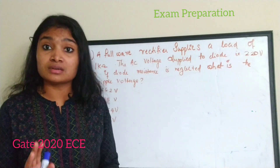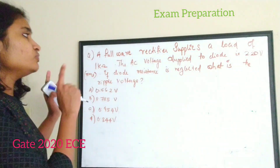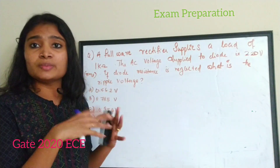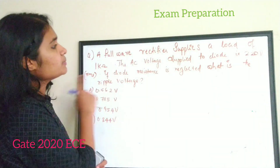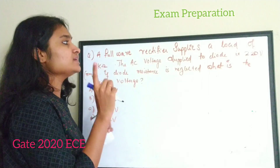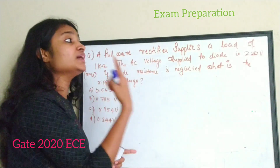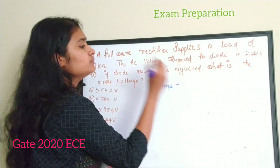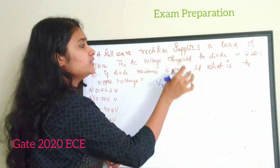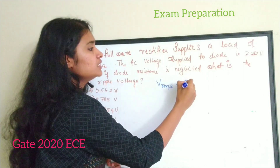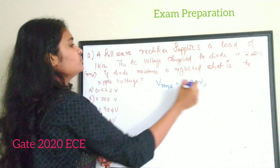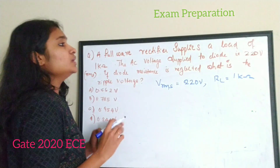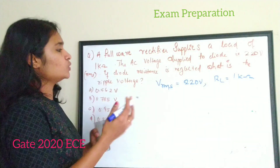Ripple is a problem occurring in the rectifier — there will be some fluctuations in your output, and this is termed as ripple. The ripple voltage will be present on the output side. We are talking about a full wave rectifier. The AC voltage applied to the diode is 220 volt, i.e., V_rms of the AC voltage is 220 volt, and the load resistor value is R_L equal to 1 kilo ohm.